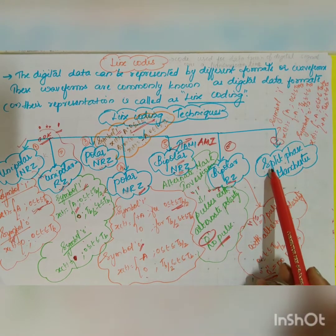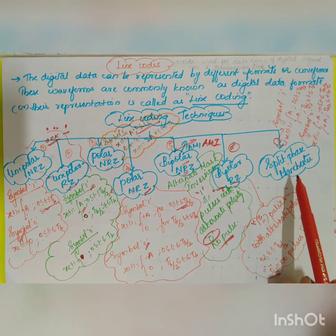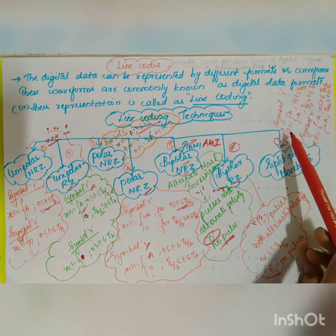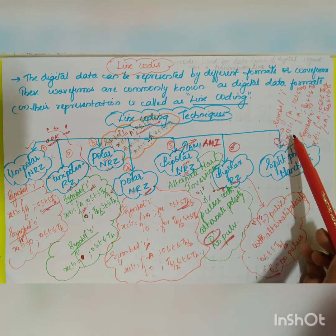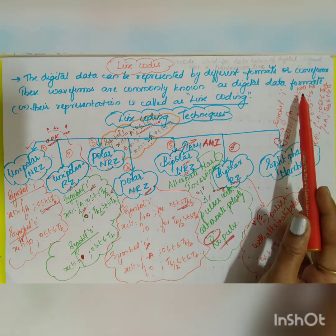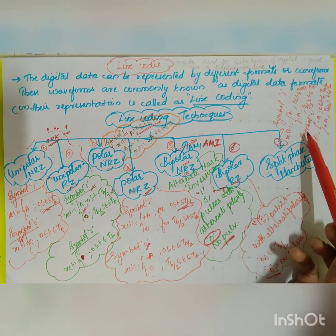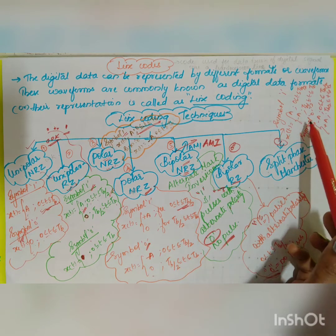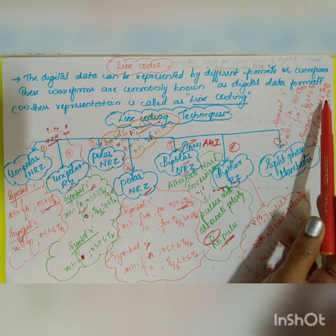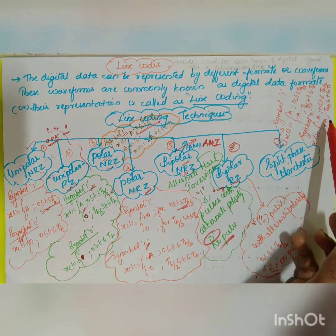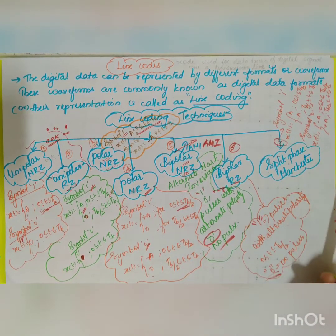The last one is called split phase Manchester. If symbol 1 is transmitted, it has two phases: x(t) = A for 0 to Tb/2, and minus A for Tb/2 to Tb. If symbol 0 is transmitted, it is the opposite: minus A for 0 to Tb/2, and plus A for Tb/2 to Tb.